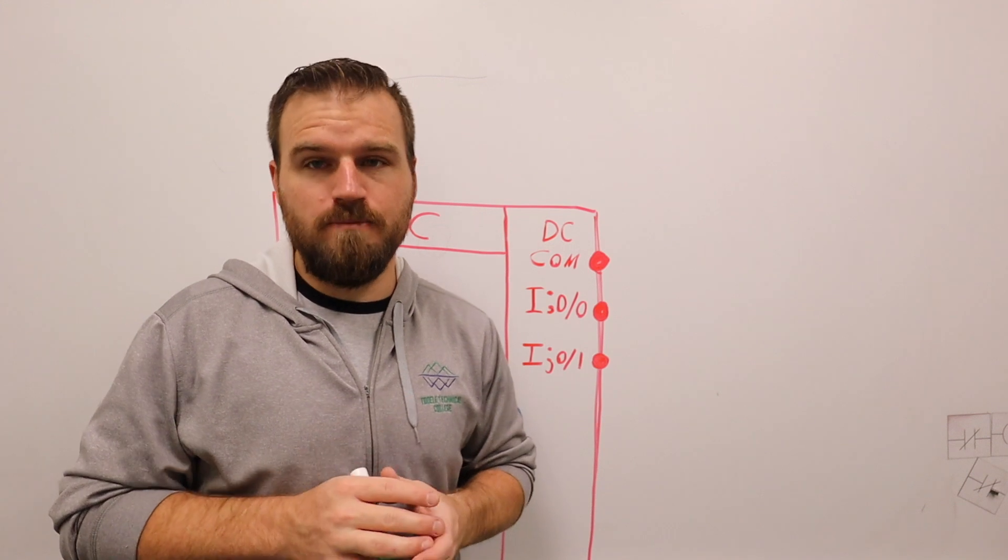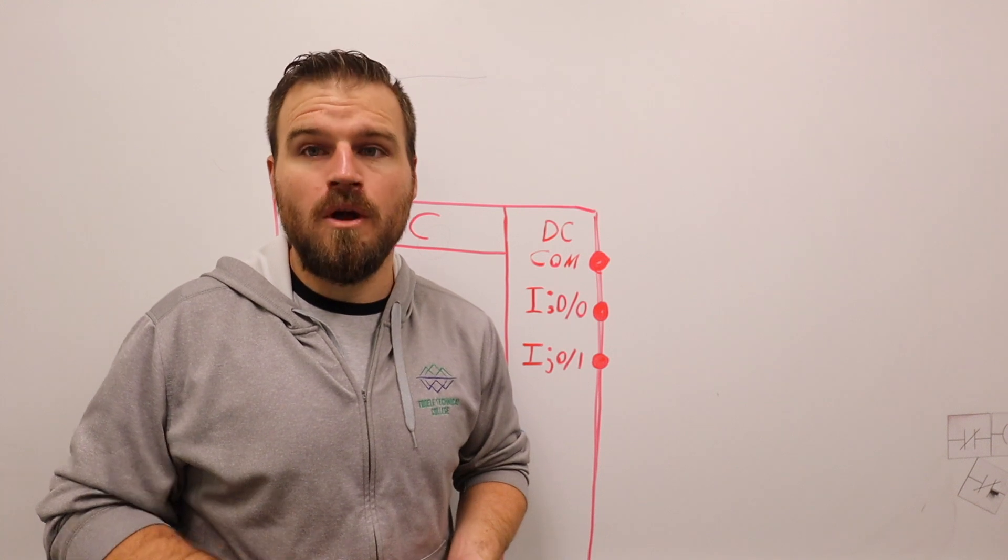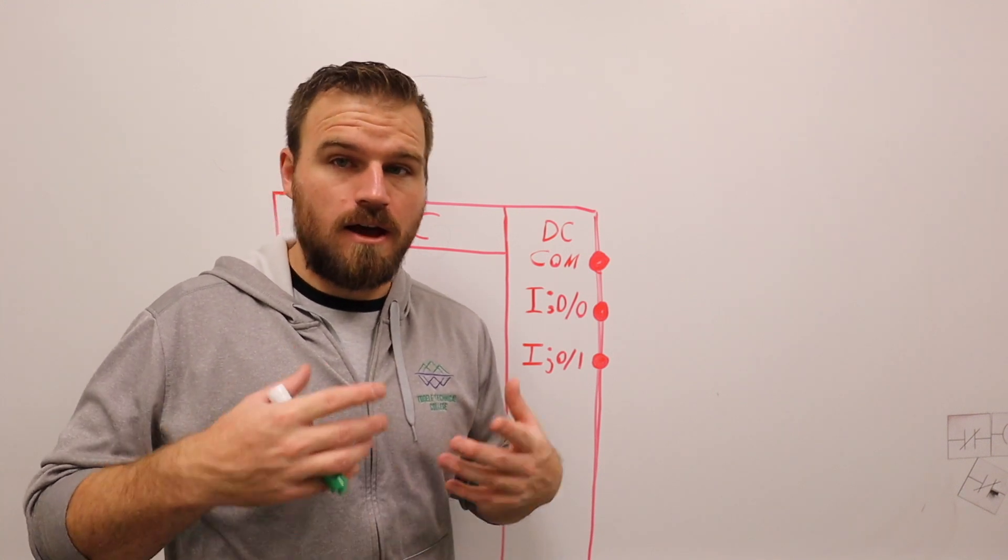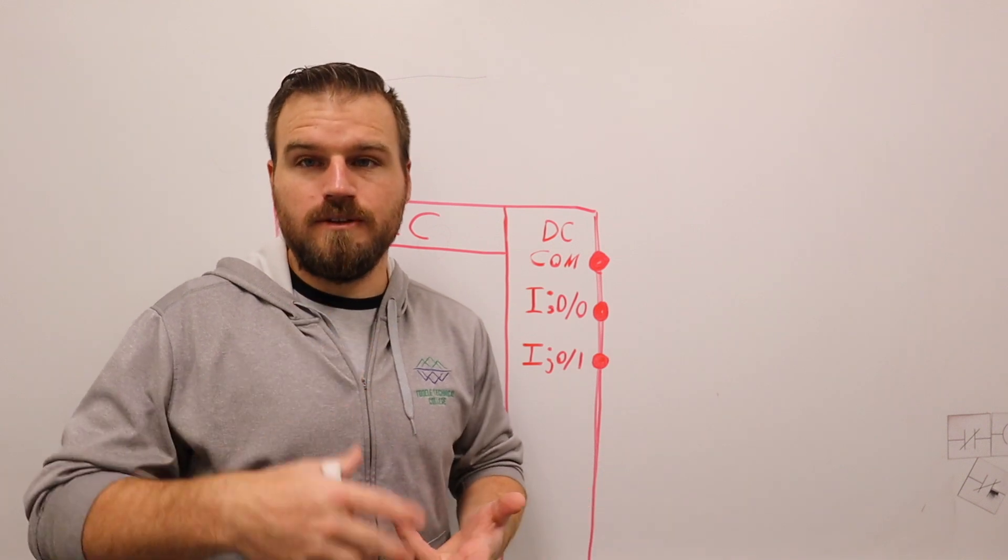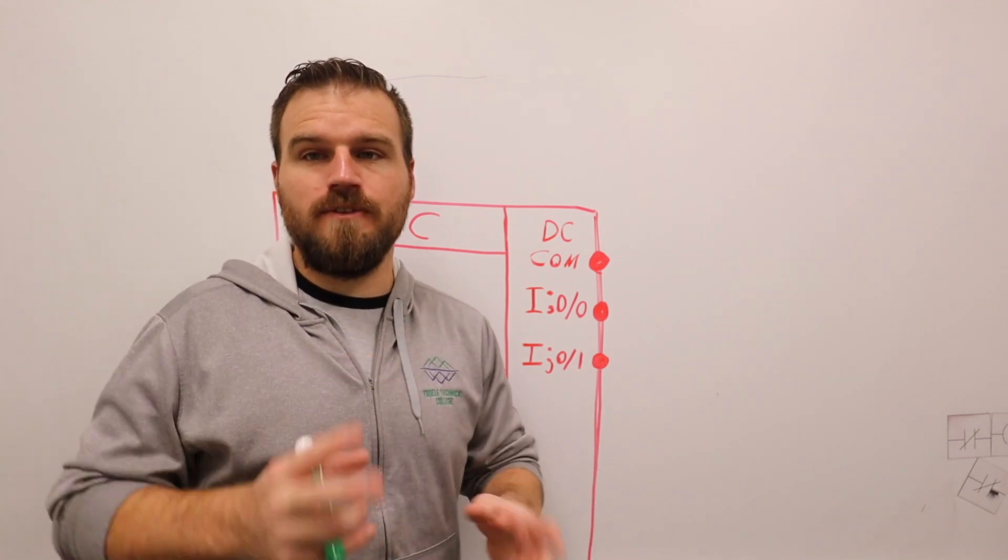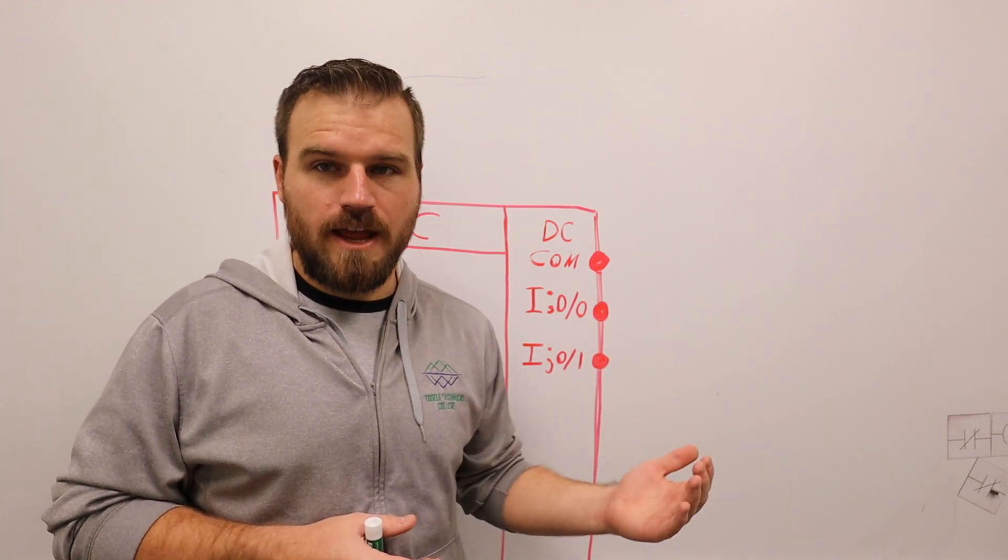So when I say this, this gets into a really kind of hairy area and can get people really confused. There are two types of inputs, wiring styles out there. Those are sinking and sourcing. We will be doing a sinking wiring diagram or wiring process or style.